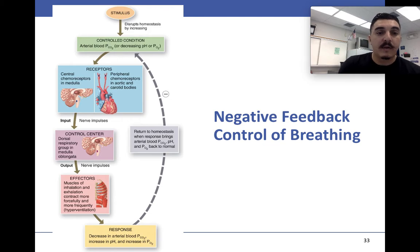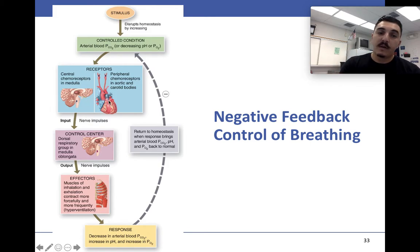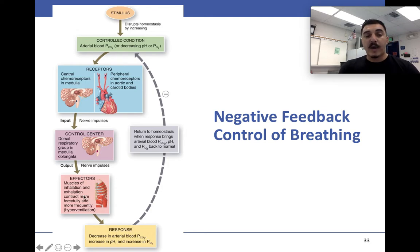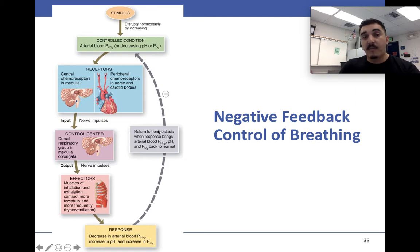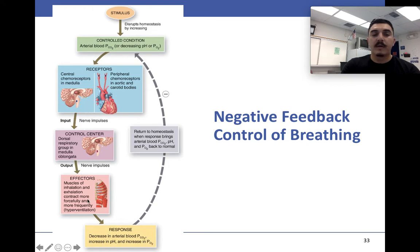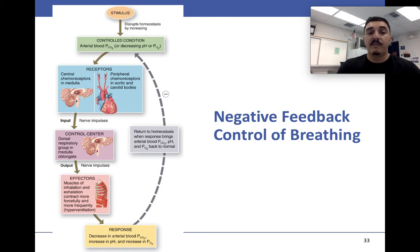Here's a negative feedback loop for breathing. A stimulus — such as CO2 being too high or O2 too low — activates receptors that send signals to the medulla and pons. Nerve impulses are then sent to the muscles to contract and stimulate breathing in or out. This decreases CO2 pressure, increases pH, and increases oxygen pressure, returning to normal partial pressure of oxygen. This also occurs during exercise when we need more oxygen.